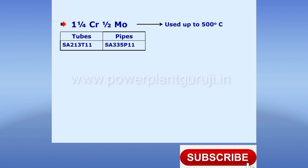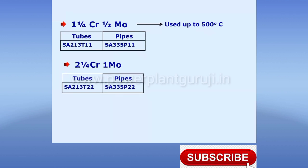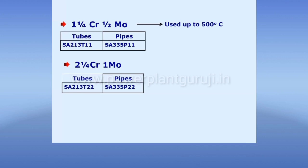Where T11 cannot be used, we have to go to a slightly higher alloy called SA213T22 metallurgy, which has two and a quarter chrome and one percent molybdenum. SA213T22 for tubes and SA335P22 for pipes. This is the most common metallurgy used in superheaters and in supercritical boiler water walls, used where the component temperature is within 540 degrees centigrade.